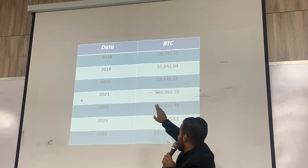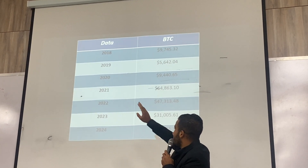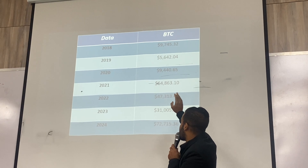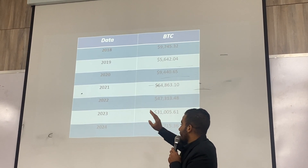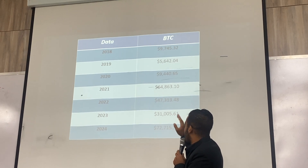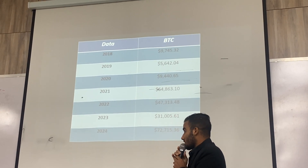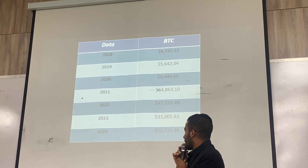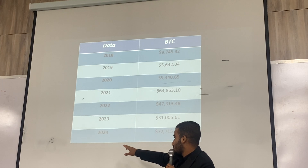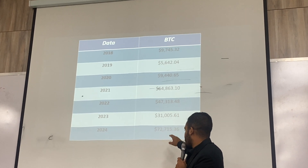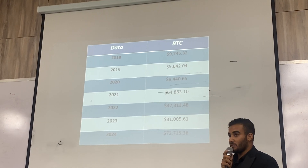The Bitcoin price history: in 2019, the price was $9,000; in early 2020, $5,000; later in 2020, $9,000; in 2021, $64,000; in 2022, $47,000; in 2023, $31,000; and in 2024, $72,000. This trend reflects the increase in open-source blockchain technology adoption.